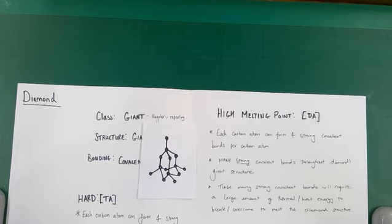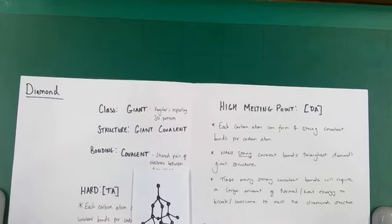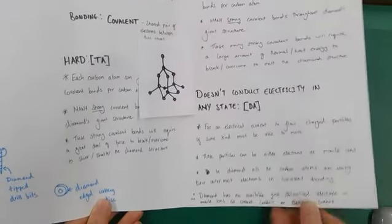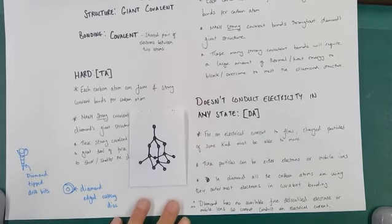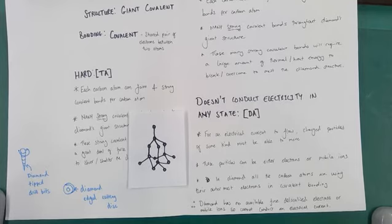Diamond also doesn't generally conduct electricity unless it contains certain impurities which allow it to do so. So diamond doesn't conduct electricity. And again, you've got to consider why. To start considering why, you want to think about why things conduct in the first place. For an electrical current to flow, you need to have a flow of some kind of charged particle. If that isn't happening, there is no current. These particles could be electrons or they could be mobile ions. So flowing electrons or flowing charged ions creates a current.